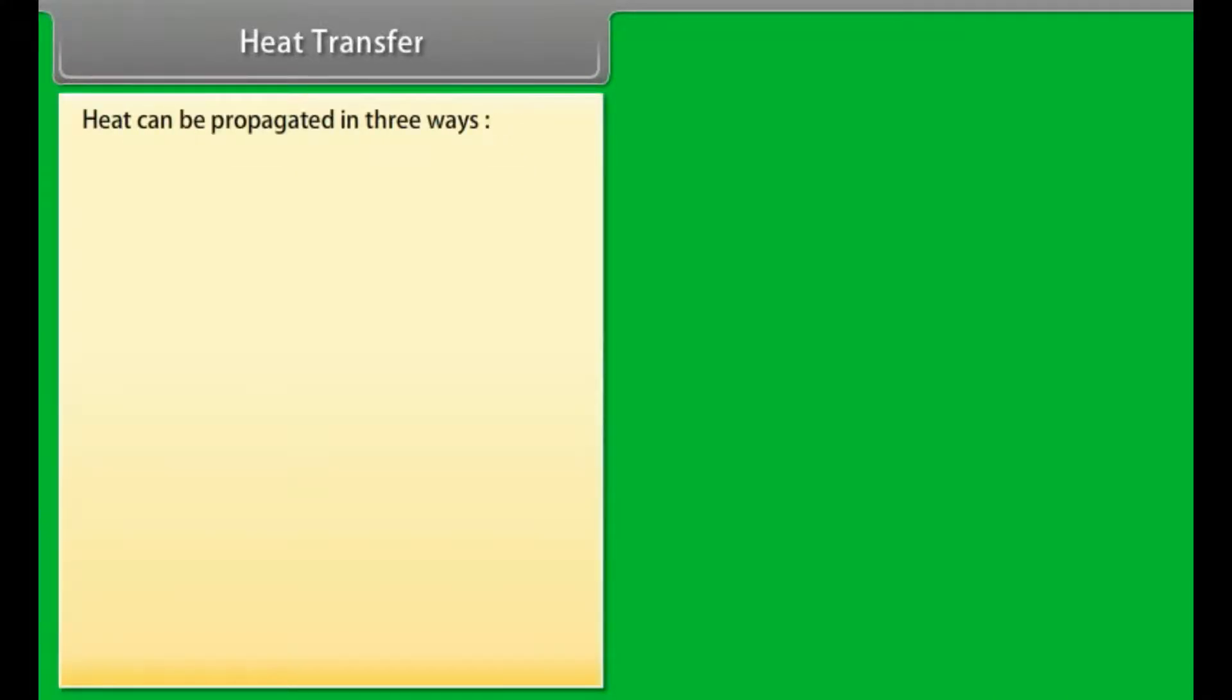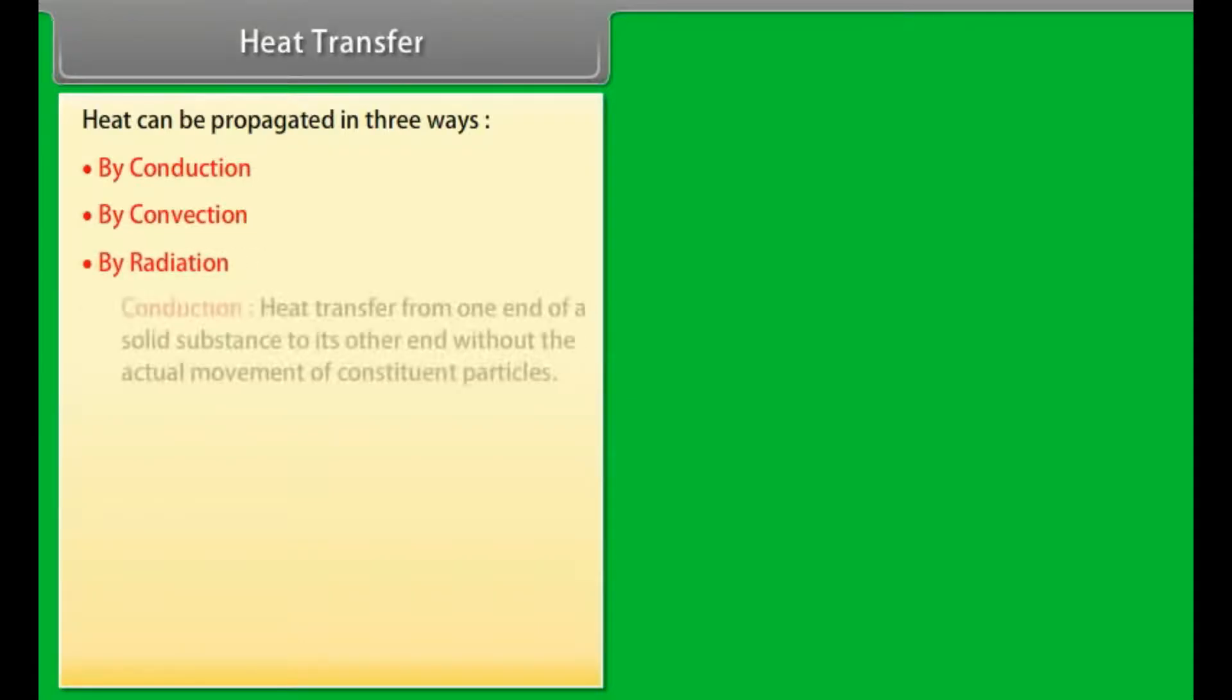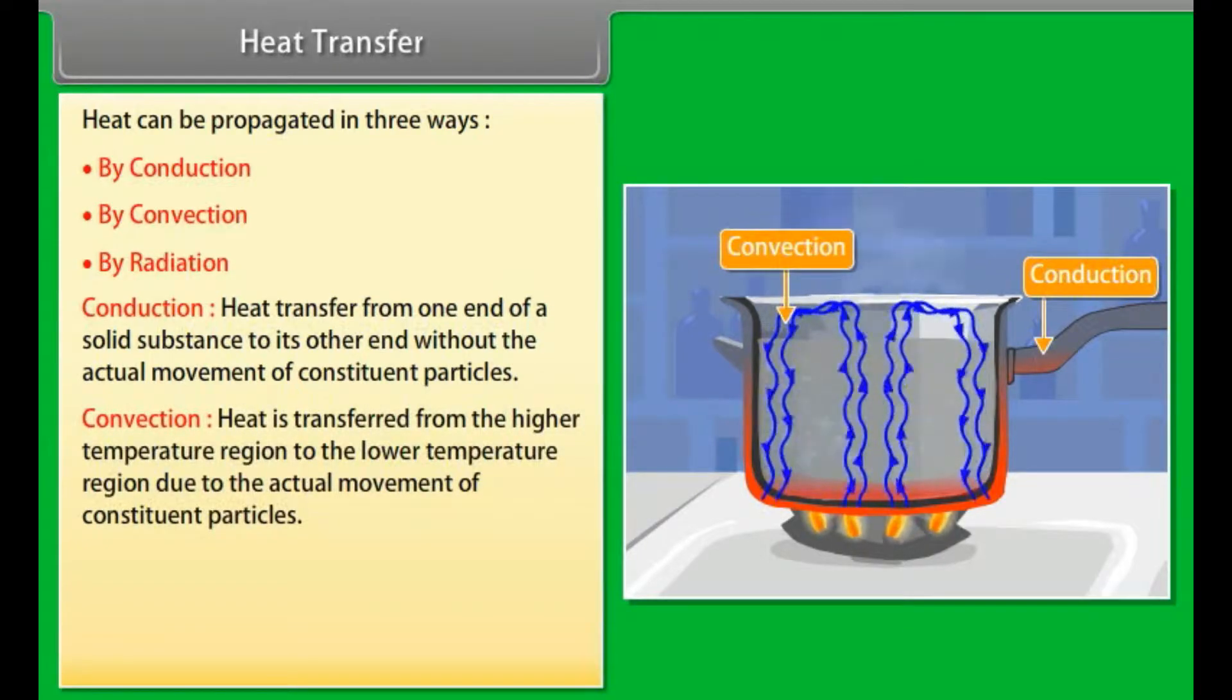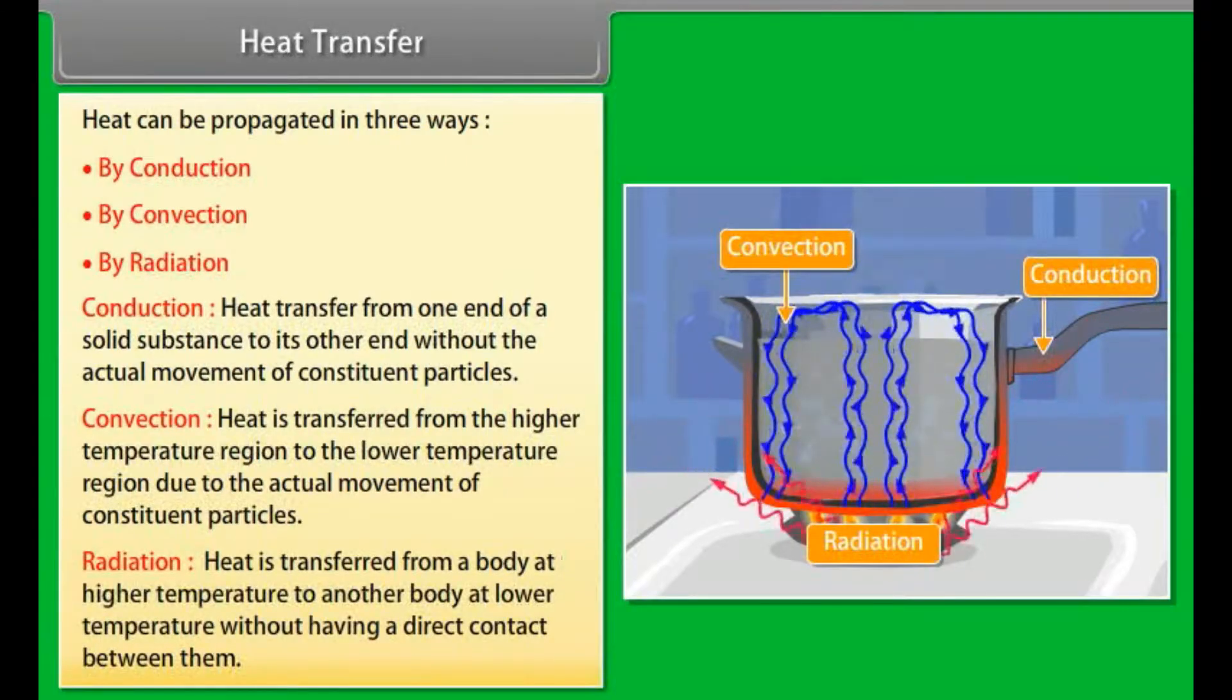Heat transfer. Heat can be propagated in three ways: Number 1, by conduction; Number 2, by convection; Number 3, by radiation. Conduction - heat transfer from one end of a solid substance to its other end without the actual movement of constituent particles. Convection - heat is transferred from the higher temperature region to the lower temperature region due to the actual movement of constituent particles. Radiation - heat is transferred from a body at high temperature to another body at lower temperature without having a direct contact between them.